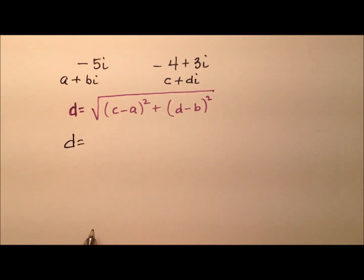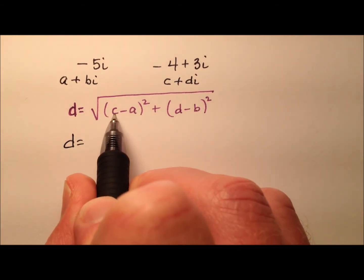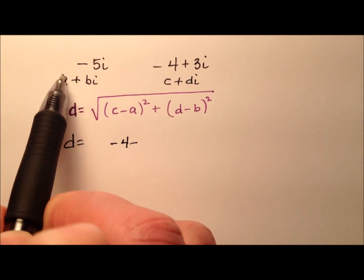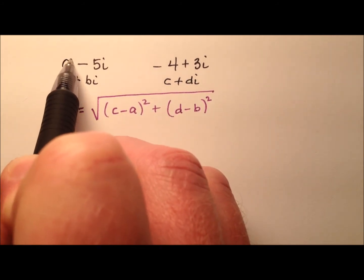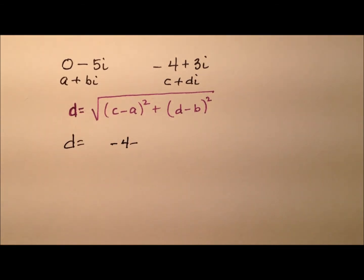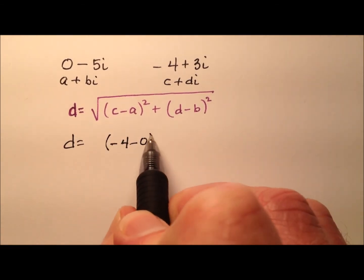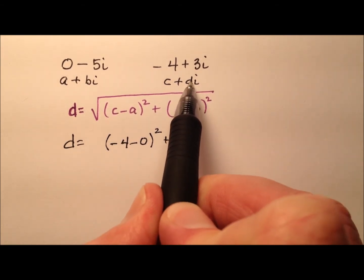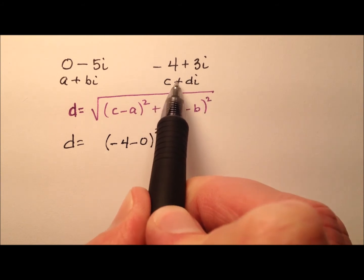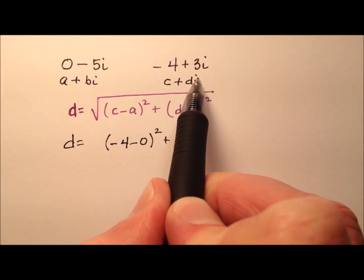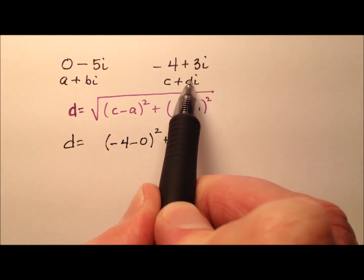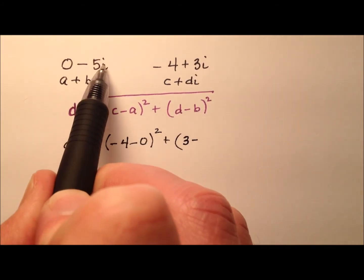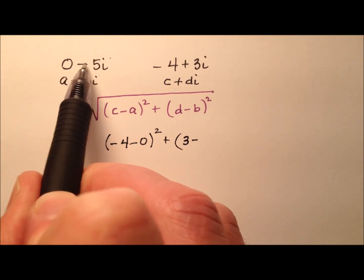So let's go ahead and see what this comes out to be. Our C is negative 4, and our A — well, there actually isn't a real part on this negative 5i number, so I'll put a 0 in its place. Square that and move on. D is going to be positive 3, because this is C plus Di — I'm not concerned with the I's right now, I just need D is 3. And B, similarly I can ignore the I's — B is negative 5.